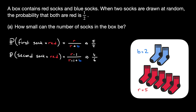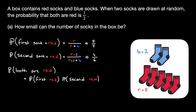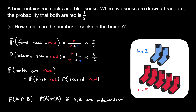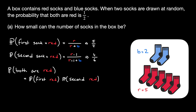Now, we can find the probability that both socks are red. We use the observation that the first and second draws are independent from each other. The probability that both socks are red equals the probability that the first sock is red multiplied by the probability that the second sock is red. Plugging in the numbers, we get 5/7 times 4/6, which equals 10/21 — which is not one half. Therefore, 2 blue socks and 5 red socks is not a valid solution.